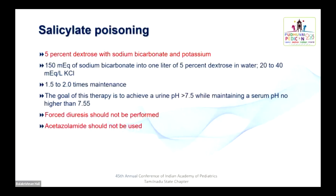In salicylate poisoning, urinary alkalinization augments excretion. The fluid of choice is 5% dextrose with sodium bicarbonate and potassium: 150 mEq of sodium bicarbonate into 1 liter of 5% dextrose plus 20–40 mEq of KCl, given at 1.5–2 times maintenance. The goal is urine pH greater than 7.5; serum pH should not exceed 7.58. If there is metabolic-respiratory alkalosis on presentation, there is no contraindication to starting bicarbonate. Forced diuresis and acetazolamide should not be performed to alkalinize the urine.